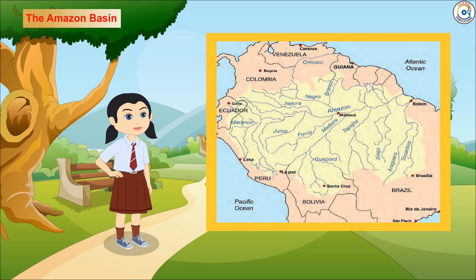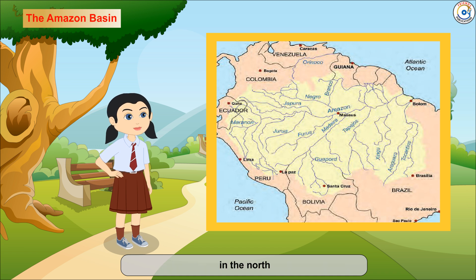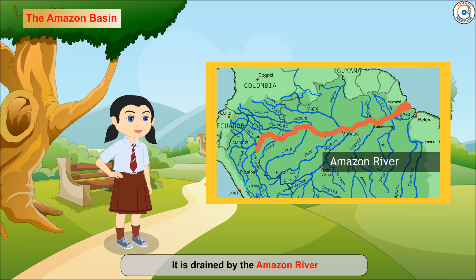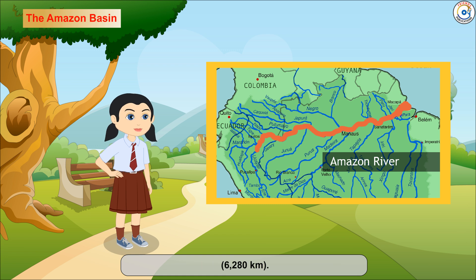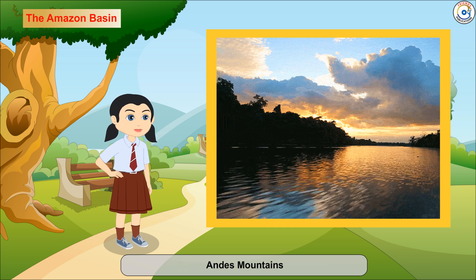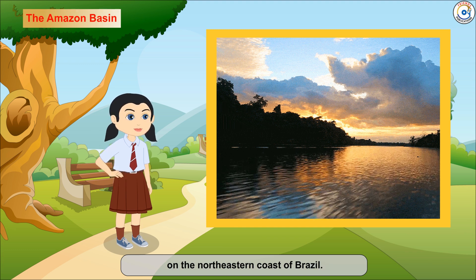The Amazon Basin is a part of South America lying in Brazil between the Guiana Highlands in the north and the Brazilian Highlands in the south. It is drained by the Amazon River, which is the largest river in the world in terms of volume of water discharged and second largest by length at 6,280 km. Its westernmost source is high in the Andes Mountains and its mouth is in the Atlantic Ocean on the northeastern coast of Brazil.